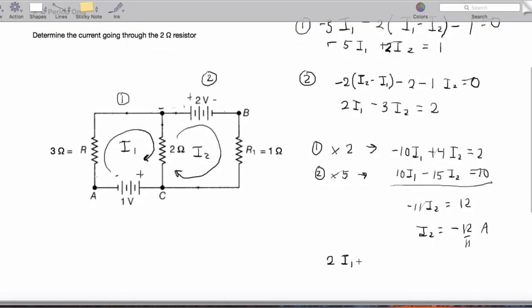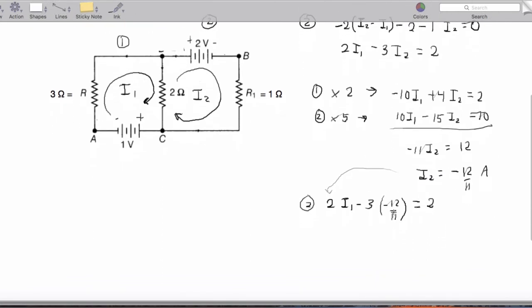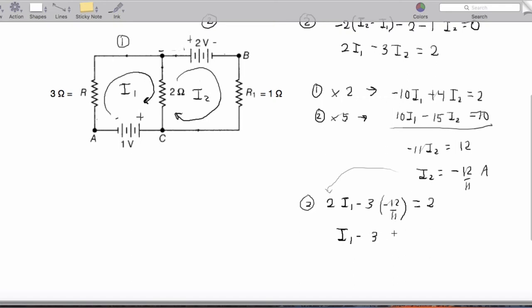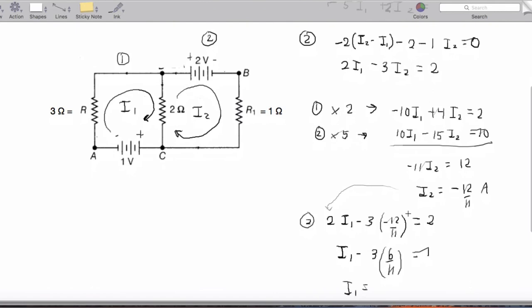2I1 minus 3 times negative 12 over 11 equals 2. I'm going to divide both sides by 2, so I get I1 minus 3 times 6 over 11 equals 1.